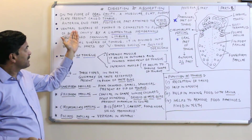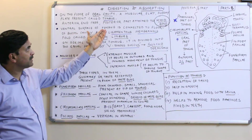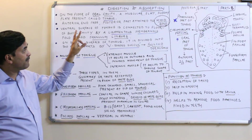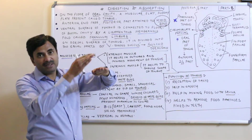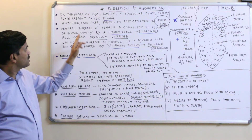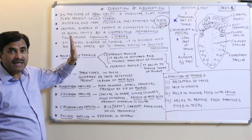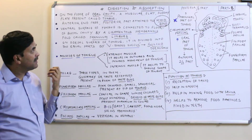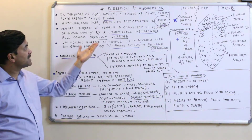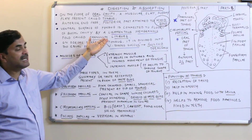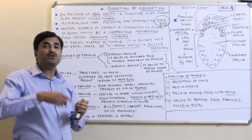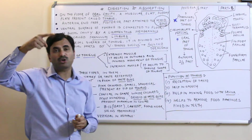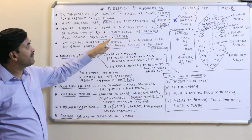The ventral surface of the tongue is connected to the floor of the buccal cavity by a membranous ligamentous fold called the frenulum lingui. If you fold your tongue, a thread-like structure is seen at the bottom, which is called the frenulum lingui.